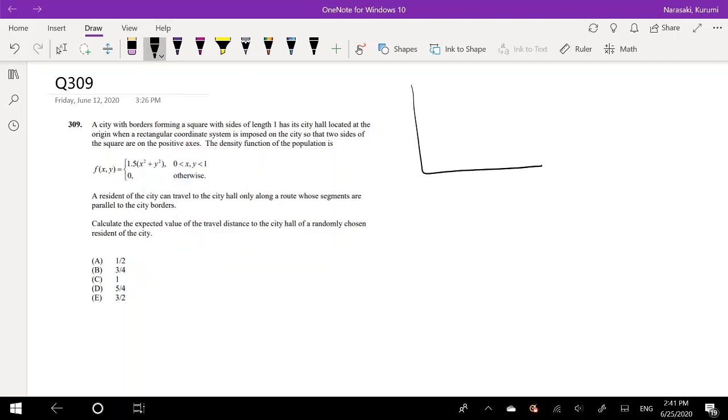So the city looks like this, right? It's length 1, and it's on the positive axis, so it looks like that. And the range is x is greater than 0 and y is less than 1, so it's definitely this range right here.